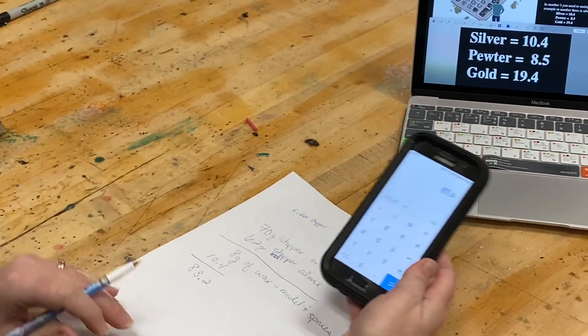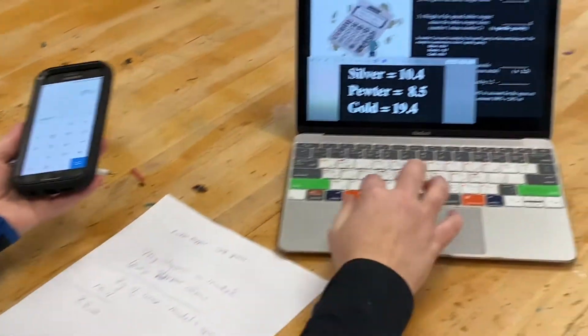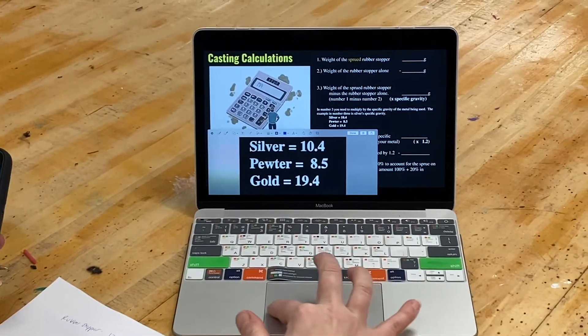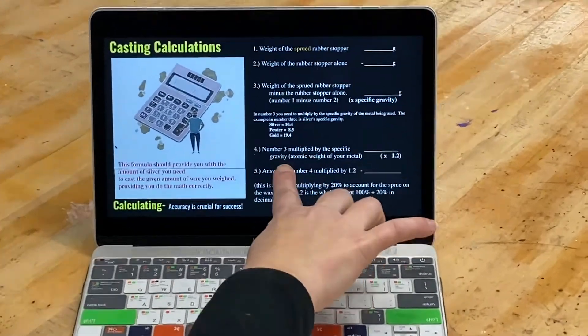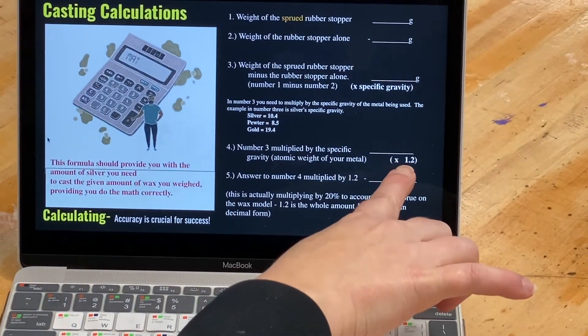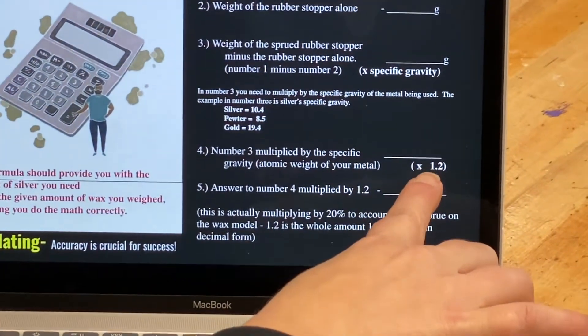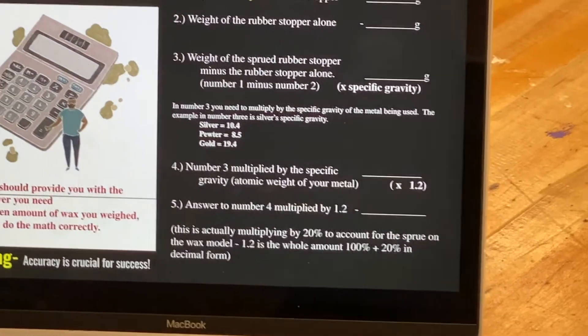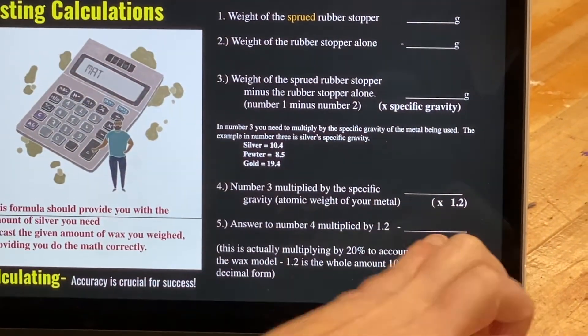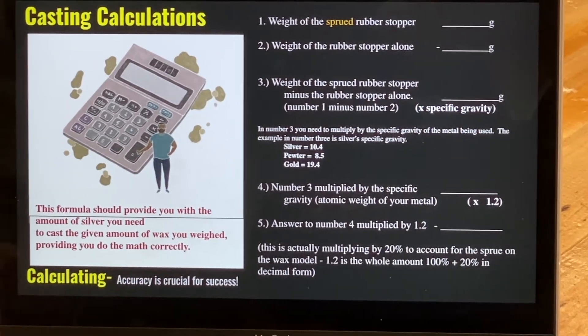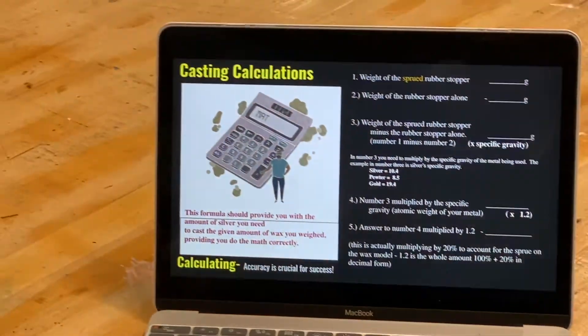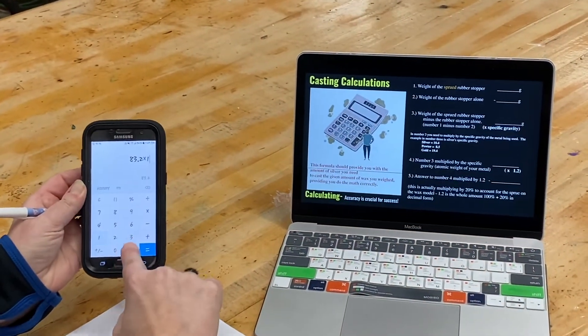And then I actually have to multiply, if we take a look at our calculation sheet here, the next thing that I have to do is multiply times 20%. So if I take an initial 100%, that would be the one that you're seeing. And the 20% is the 0.2. So if I take my 83.2 times 1.2.